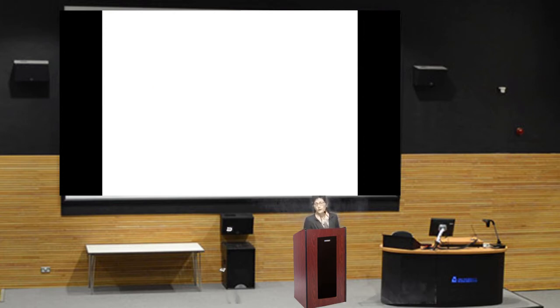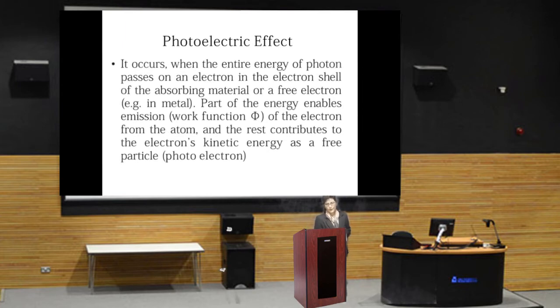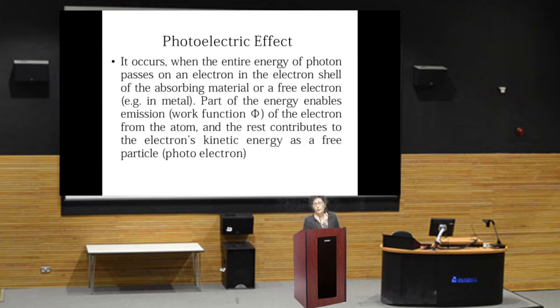Here the question is, where does photoelectric effect occur? It occurs when the entire energy of a photon passes to an electron in the electron shell of the absorbing material or a free electron like in metal. Part of the energy enables emission, the work function phi of the electron from the atom, and the rest contributes to the electron's kinetic energy as a free particle or photoelectron.